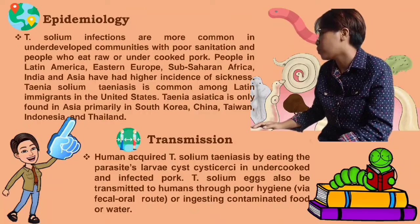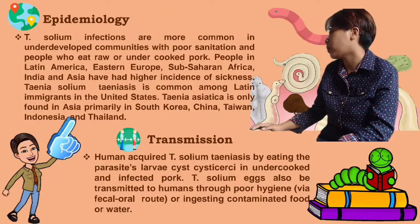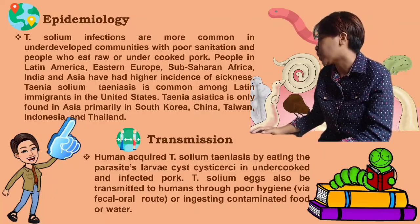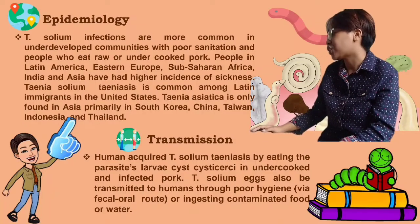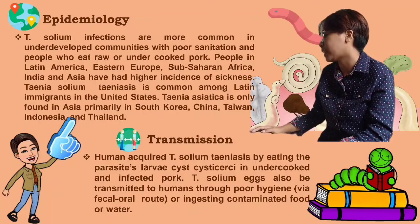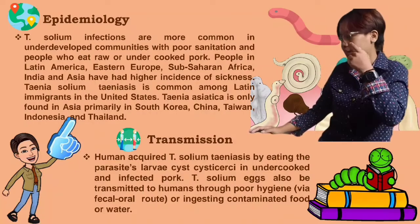Taenia solium taeniasis is common among Latin immigrants in the United States. Taenia asiatica is only found in Asia, primarily in South Korea, China, Taiwan, Indonesia, and Thailand.